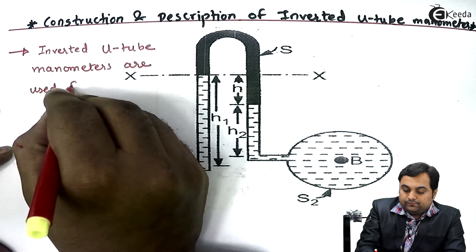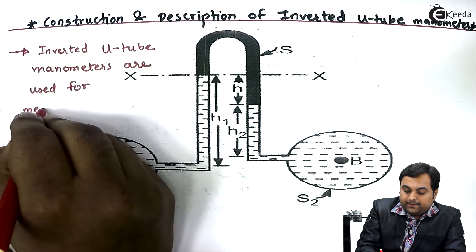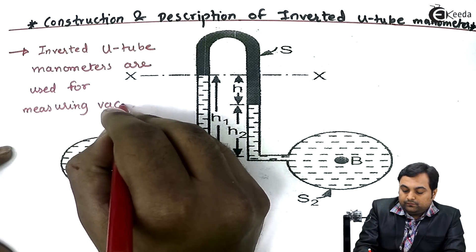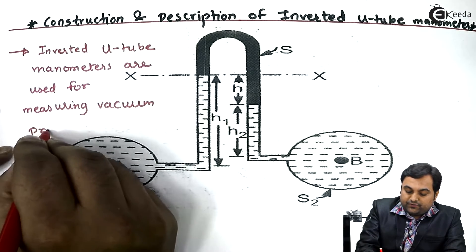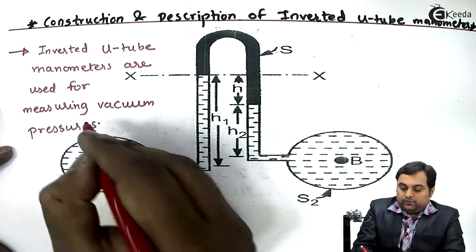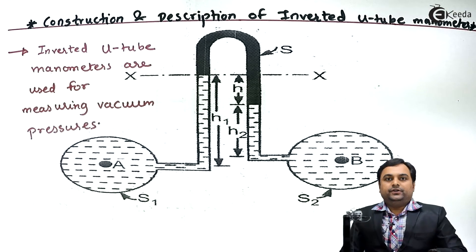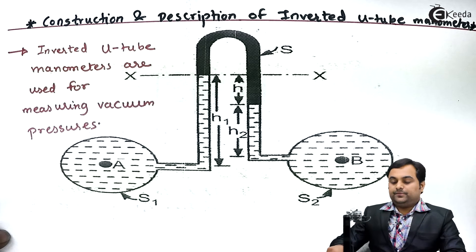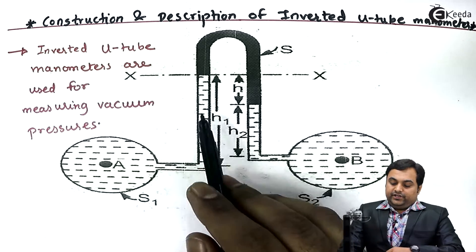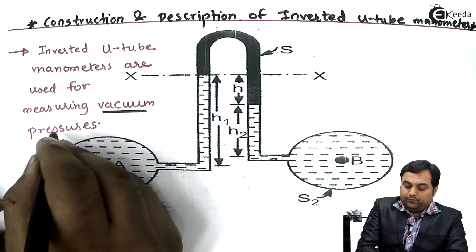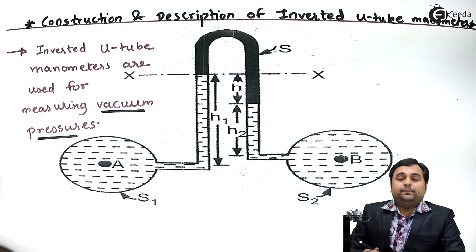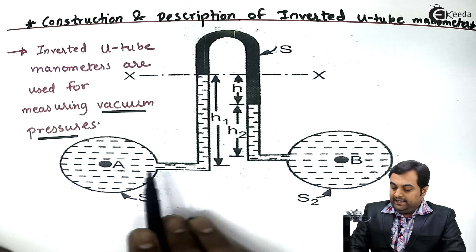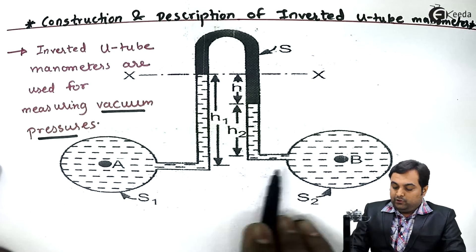for measuring vacuum pressures. This is a very important point. Previously we have seen that differential manometers were used to measure pressure above atmosphere. Inverted U-tube manometers are used for vacuum pressure measurement — that is, the pressure would be below atmospheric.